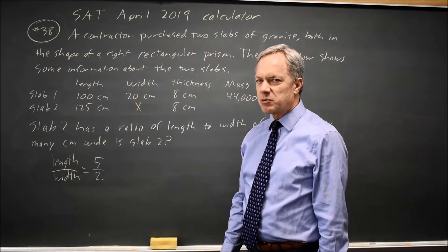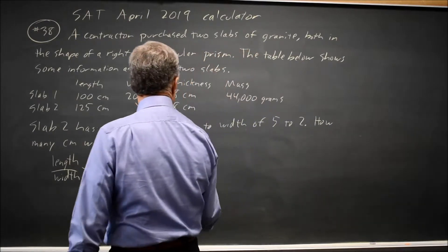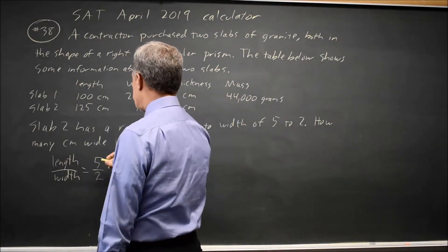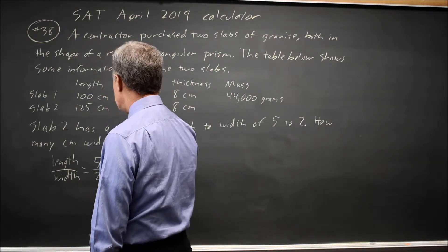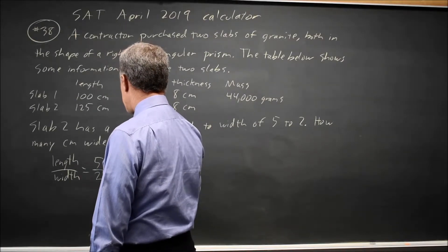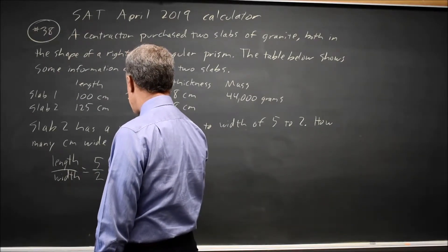Length to width is 5 to 2 which means length over width is 5 over 2. And the length is given as 125 and the width is missing but I'm calling that x.